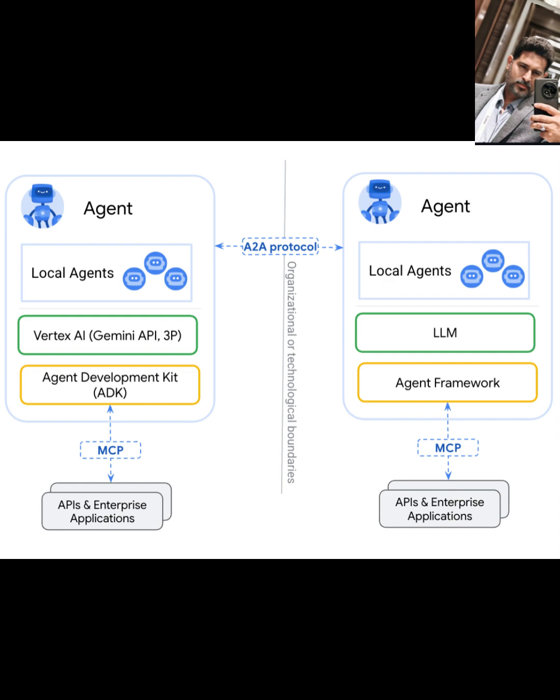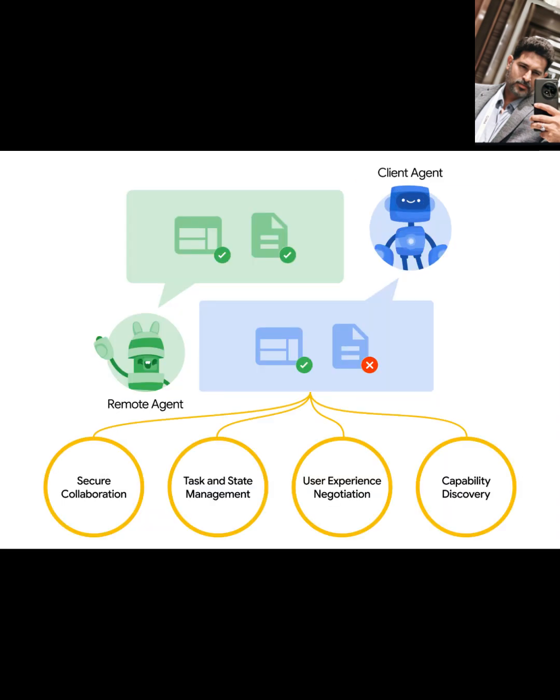For long-running tasks, A2A supports both real-time and asynchronous communication. The task/get method allows polling of task states, while task/push-notification/set registers webhooks via the push-notification service. This service, acting as a trusted intermediary, authenticates and forwards updates to pub/sub systems, email services, or APIs, ensuring reliable notifications in enterprise settings, even for disconnected clients.